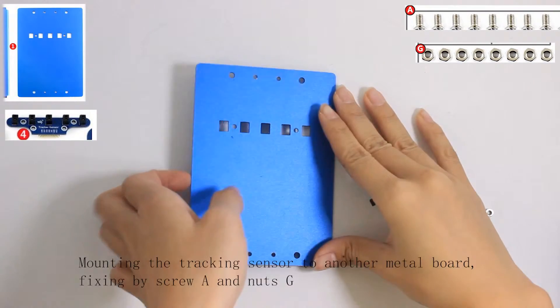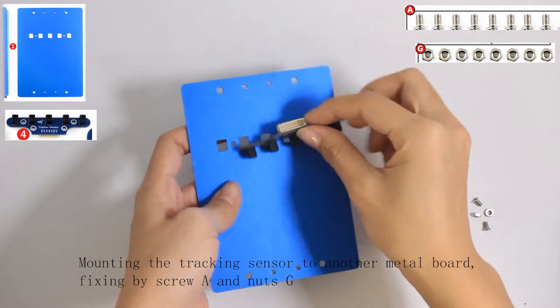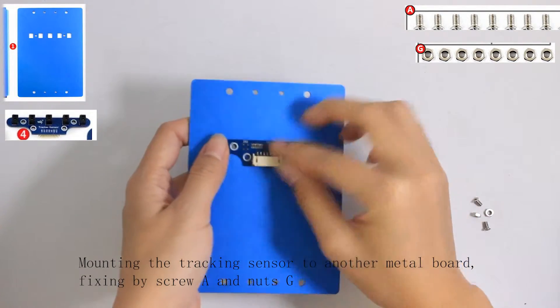Mounting the tracking sensor to bottom metal board, fixing it by screw A and nut C.